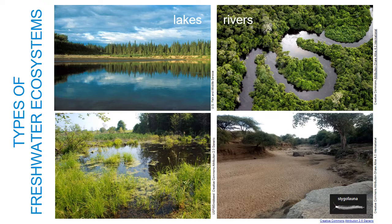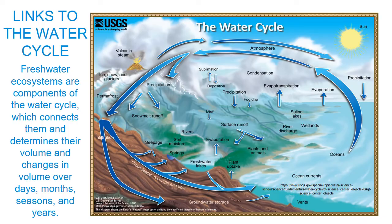Freshwater ecosystems come in many shapes and sizes. Lakes, rivers, and wetlands will already be familiar to you. Lakes are bodies of standing or slow-flowing water, ranging from small ponds to great lakes like Lake Victoria in East Africa. Rivers range from small streams to the mighty Amazon River. Wetlands are areas flooded seasonally or permanently, underlain by hydric soils, and contain distinct plant communities adapted to waterlogged soils. There are also subterranean freshwater ecosystems including water-filled caves, fissures, and shallow aquifers, inhabited by specially adapted organisms called stigofauna.